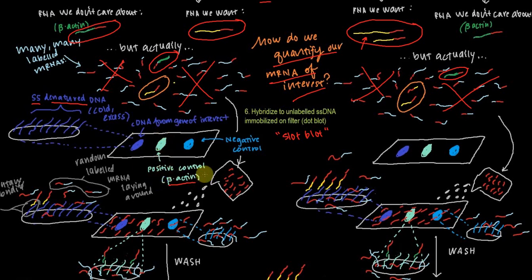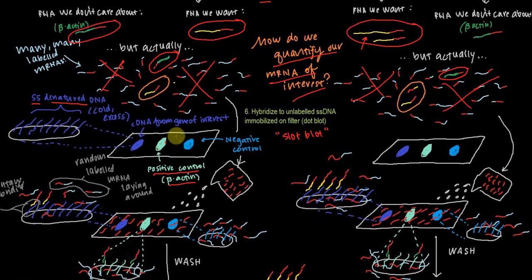The second spot is going to be for beta-actin, and we're going to use it as our positive control. A positive control in this context is something that we would think will hybridize to the beta-actin DNA on this dot blot, but we do not want it to change based on our experimental conditions. We wouldn't expect to see a difference in level of transcription of beta-actin when there's an activator specific to our gene of interest. So we just want to make sure that everything is working and that we can actually see something — that's why you use a positive control. Finally, there is the negative control, which is just some non-specific DNA that shouldn't have any mRNA hybridizing to it at all. We want to make sure that hybridization is specific to what we're interested in, so we would expect to see nothing hybridized to the negative control. We're going to use the same dot blot for both treatments.